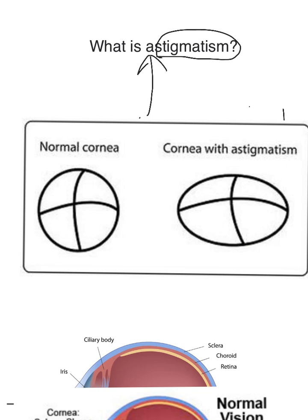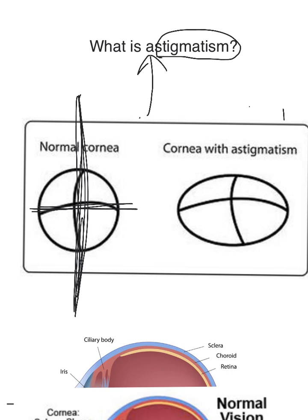In a normal cornea, it's perfectly round like a baseball. The refractive power of each axis — the vertical axis, which we call a meridian, and the horizontal meridian — is the same. In a cornea with astigmatism, the refractive power of the vertical meridian is different than the refractive power of the horizontal meridian. Because of this, you have two focal points instead of just one.